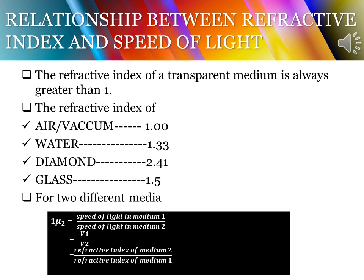For two different media, the refractive index of the second medium with respect to the first is given by the speed of light in medium 1 divided by the speed of light in medium 2. If V1 is the speed in medium 1 and V2 is the speed in medium 2, then μ₂₁ = V1 / V2. Since refractive index and speed of light are inversely proportional, the refractive index of the second medium with respect to the first is given by the ratio of the refractive index of the second medium to the refractive index of the first medium.